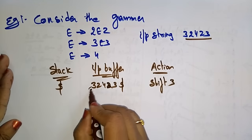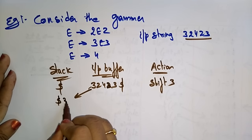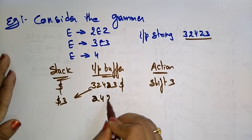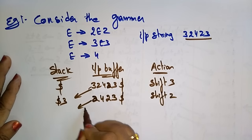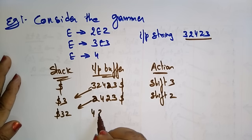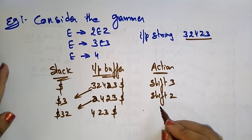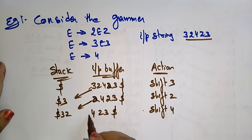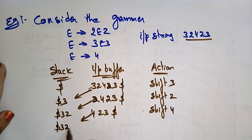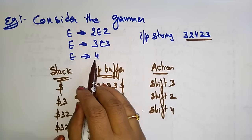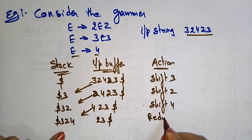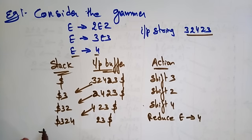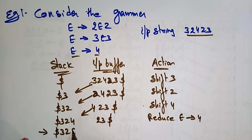First, shift 3 onto the stack — stack is dollar 3, input is 2 4 2 3 dollar. Next, shift 2 — stack is dollar 3 2, input is 4 2 3 dollar. Then shift 4 — stack is dollar 3 2 4. By the grammar E → 4, we can replace 4 with E. So reduce: stack becomes dollar 3 2 E, input is 2 3 dollar.